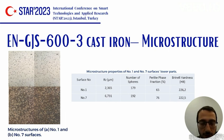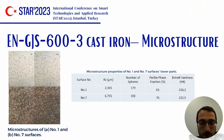It should be noted that hardness, perlite phase fraction, and number of spheres are all consistent with the standard of ductile iron. In the material standard of this type of ductile iron, number of spheres should be higher than 100, perlite phase fraction has to be higher than 50%, and Brinell hardness, which may depend on customer specifications, is between 190 and 270.